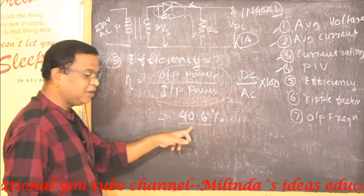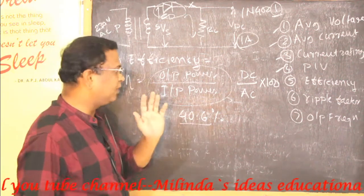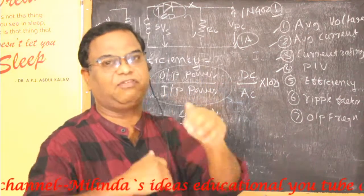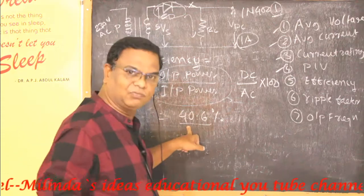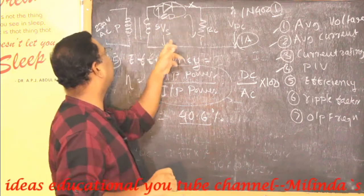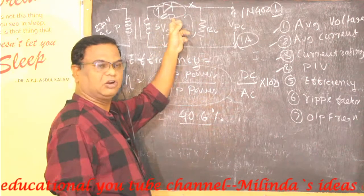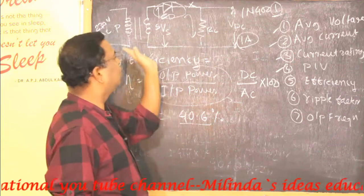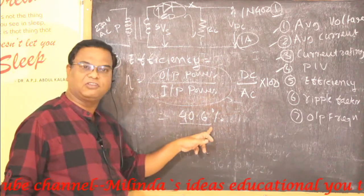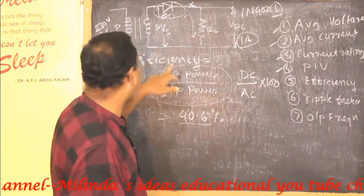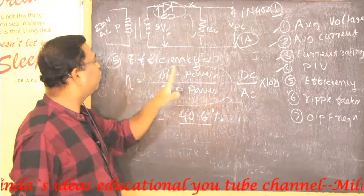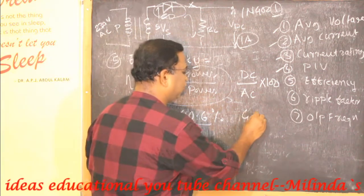The efficiency is 40.6%, which is below 50%. This is because only the positive half cycle is rectified and converted to DC — the negative half cycle is lost. Additionally, there are component losses such as diode voltage drop and resistor potential drops, which further reduce efficiency. So when we apply the input AC voltage Vm through Vs, approximately 40.6% efficiency is achieved at the output of the half-wave rectifier circuit.